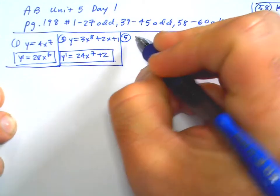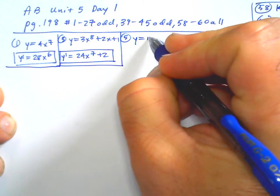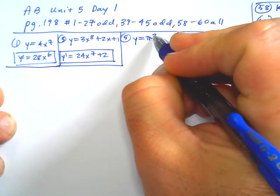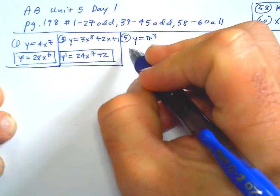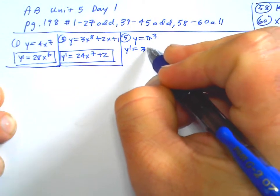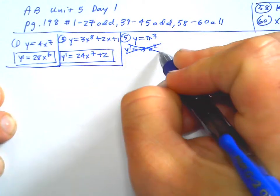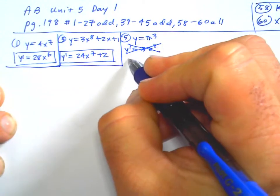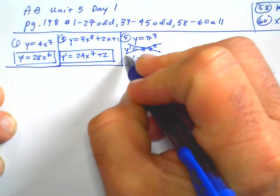Number five: y equals pi cubed. This is where people are going to make a mistake — they're going to be like, oh, y prime is 3 pi squared. No. Pi cubed is a number, so y prime is 0.